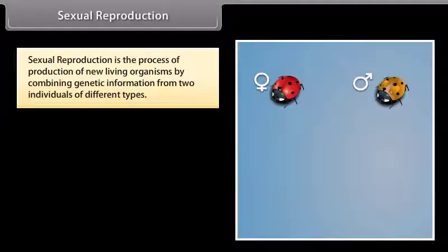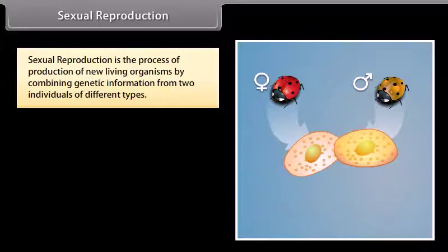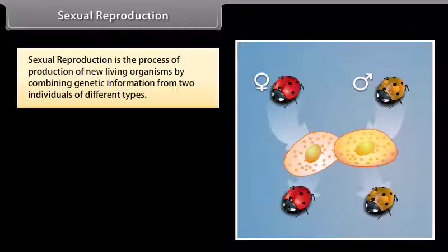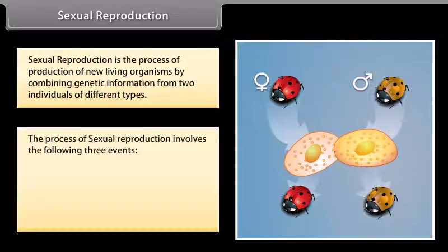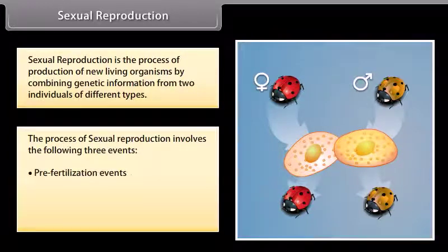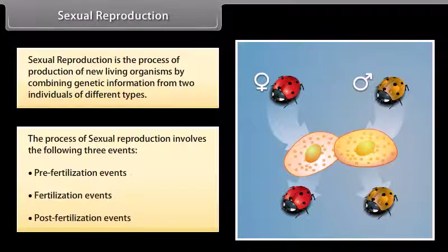Sexual reproduction is the process of production of new living organisms by combining genetic information from two individuals of different types. The process of sexual reproduction involves the following three events: pre-fertilization events, fertilization events, and post-fertilization events.